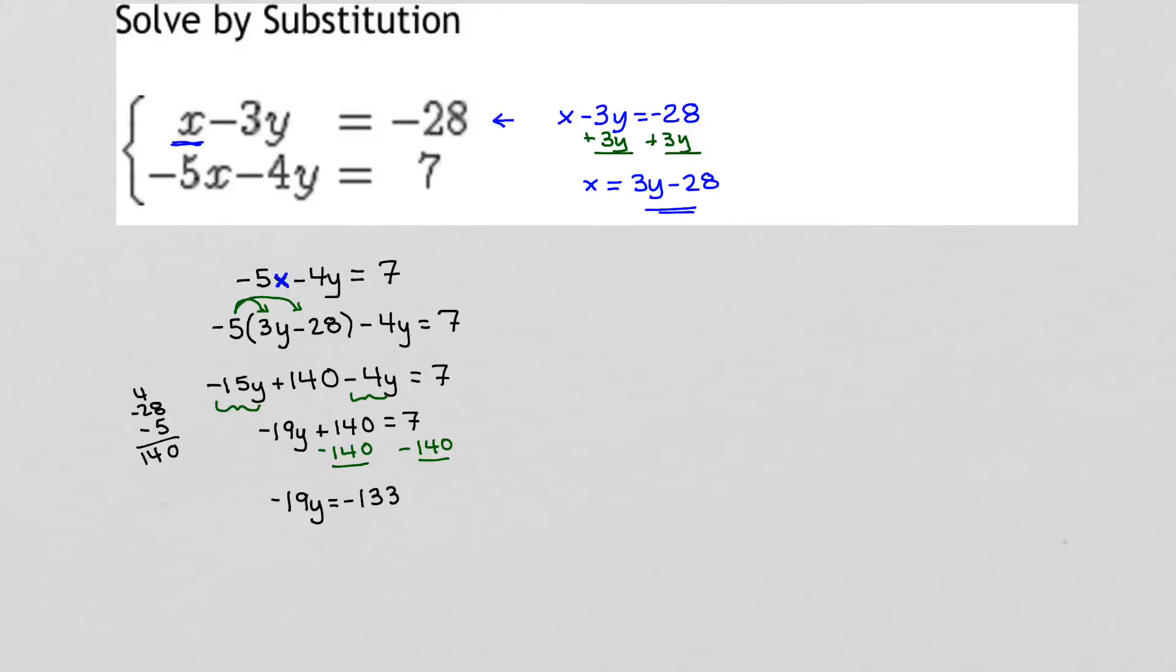And finally, our last step will be to divide. We divide both sides by negative 19. That gives us y equals negative, and now we get a calculator out. That gives me negative 7. But wait, I see I made a mistake here. I'm dividing both sides by negative 19. So actually, my answer is not negative 7, but positive 7. So y is positive 7.